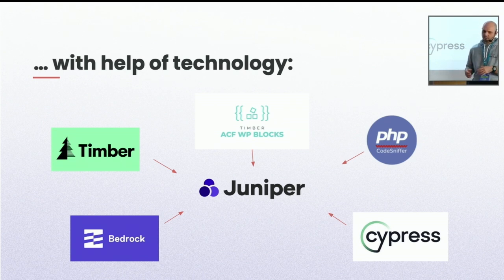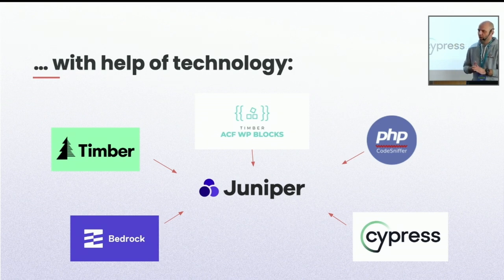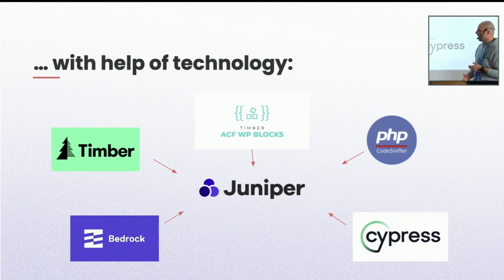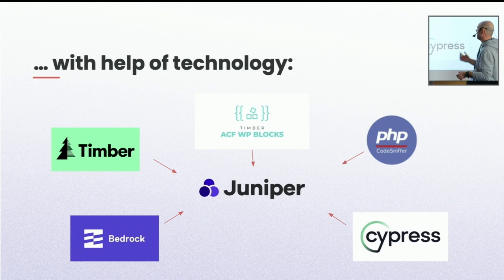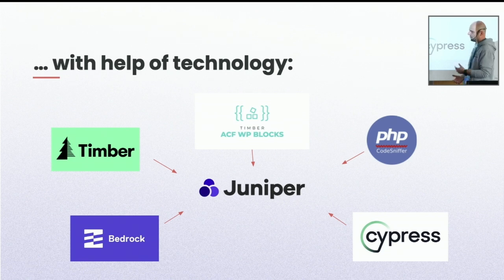We achieved this with a set of technologies. We built our own boilerplate — called Juniper — which is a toolset of a few libraries enabling us to create very fast websites that work with Gutenberg and are easy to maintain in terms of CI/CD process. We use Timber, Bedrock, ACF blocks, and also Cypress if there's a need for unit tests on the front-end side, plus PHP CodeSniffer to make cooperation a little bit easier.